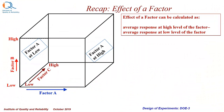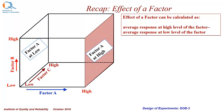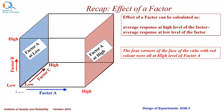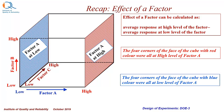Please recall from our previous videos that the effect of a factor can be calculated as average response at high level of the factor minus average response at low level of the factor. In this particular cube, the four corners of the face with red color were all at high level of factor A, and the four corners of the face with blue color were all at low level of factor A.